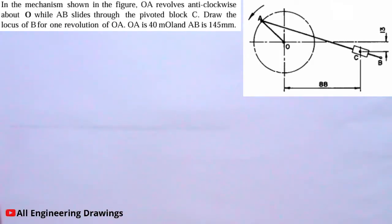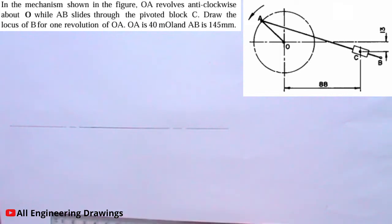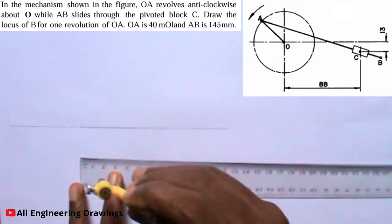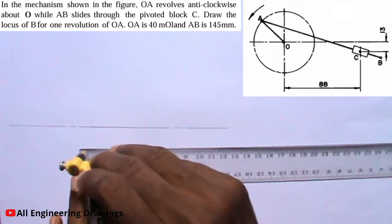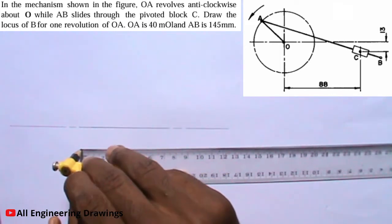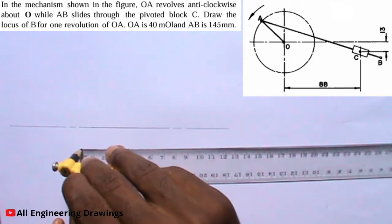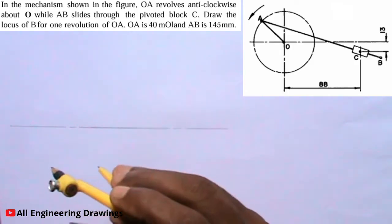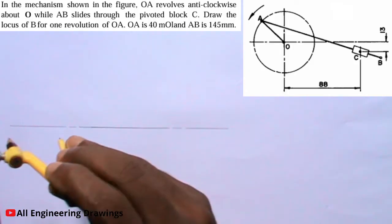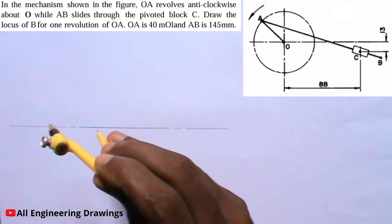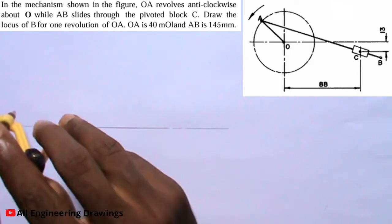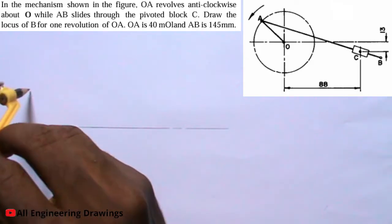From the question you will see that the line AO is 40mm, so I will adjust my compass to a radius of 40mm. Then I will place my compass on the horizontal line I just drew, and I will draw a circle.